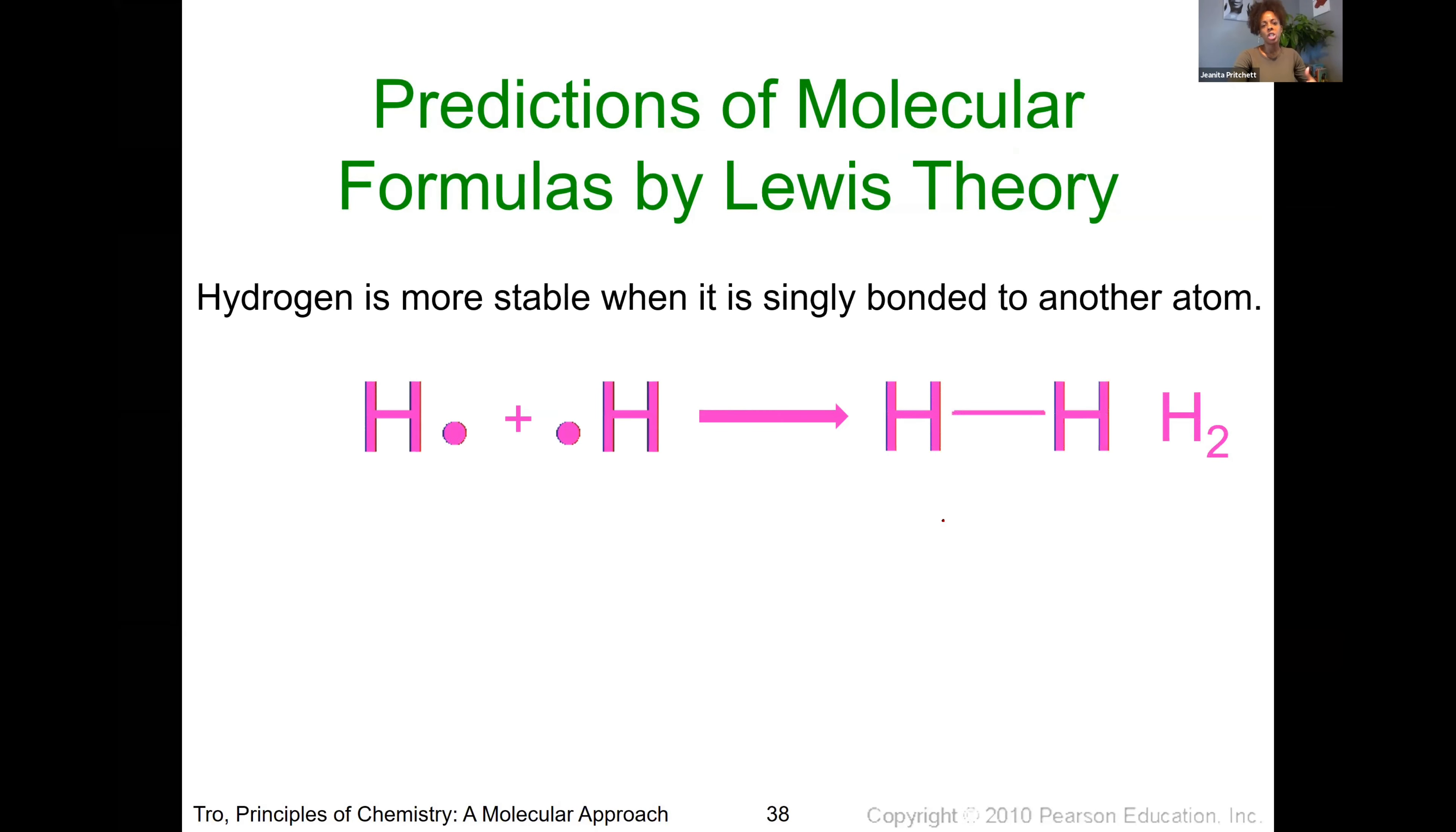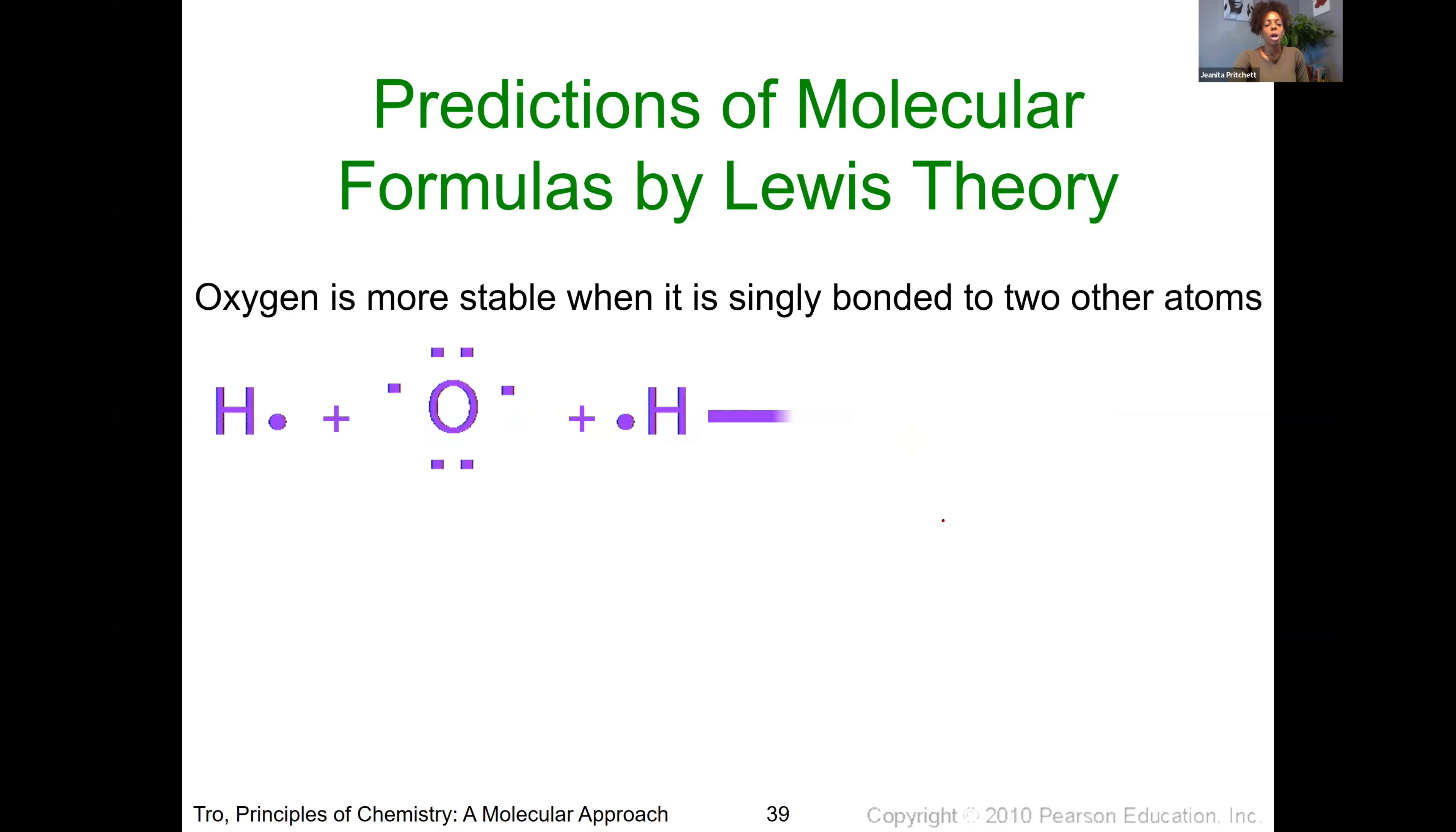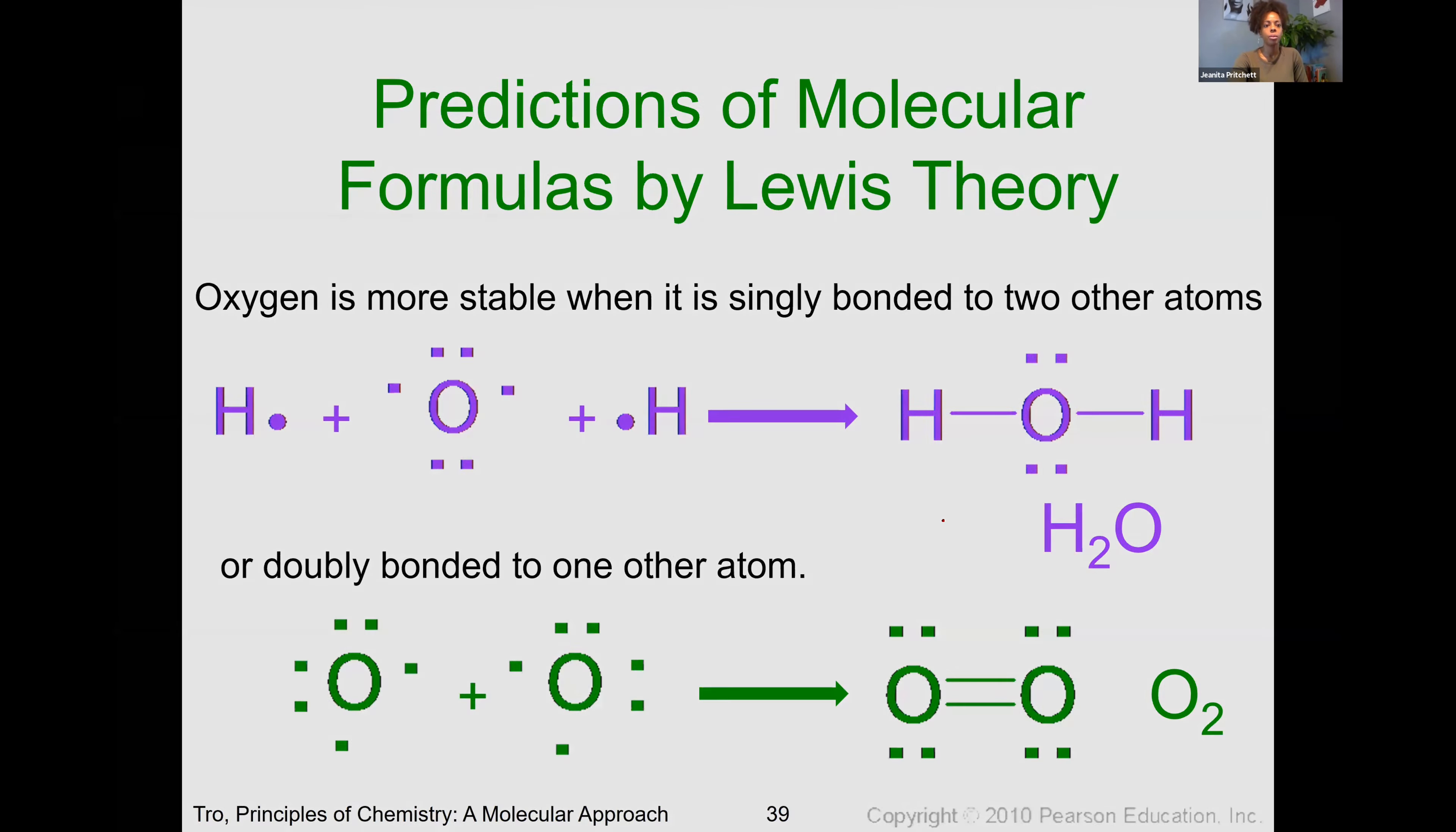And so there's a couple predictions associated with these different expected Lewis structures that you would end up seeing. First, we have hydrogen, and hydrogen is typically most stable when it's singly bound to one other atom, whether it be itself or to other atoms like we saw in the water example, or like what we're seeing here with the hydrogen to chlorine example. We also know oxygen is most stable when it has two different bonding points connected to it, whether that be through two single bonds or through a double bond, like what we saw in the O2 example.